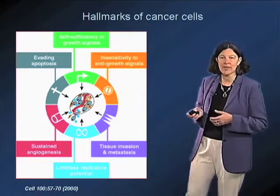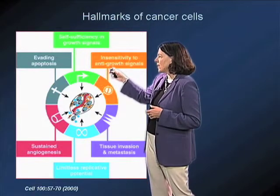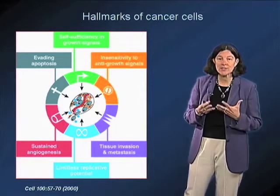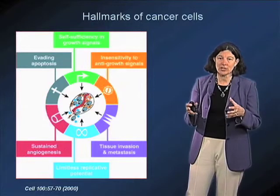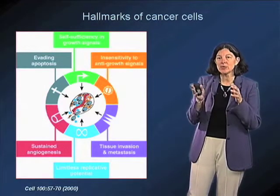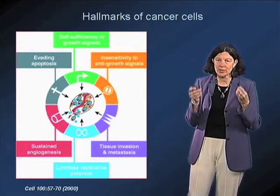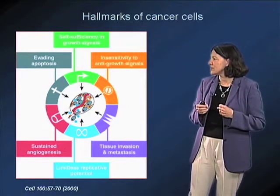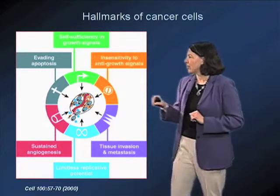I'll just touch on a couple of these today. Tumor cells can acquire an insensitivity to anti-growth signals — signals that normally constrain their proliferation. An example of that is the inability to recognize that they're surrounded by other cells, their inability to detect or respond appropriately to environmental cues that would normally slow their growth.